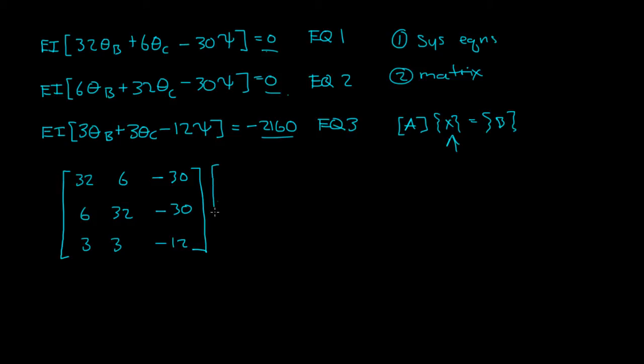And then here your X is your unknown, so theta B, theta C, theta B, theta C, and then you have psi. And that's equal to your 0, 0, and then negative 2160.